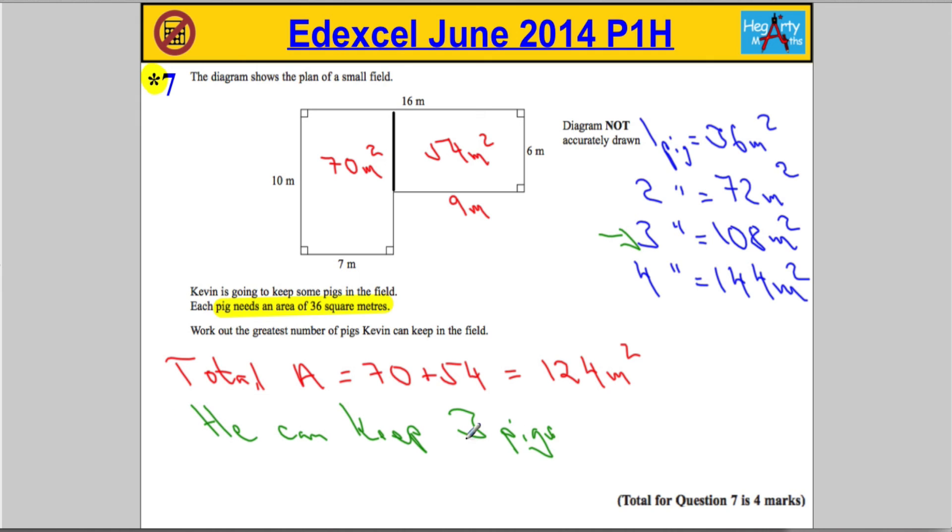Notice I've explicitly stated that—that's because we're dealing with a starred question, a QWC question. You need to state that in your answer. You can't just leave it at this. You need to explain your answer, so he can keep 3 pigs.